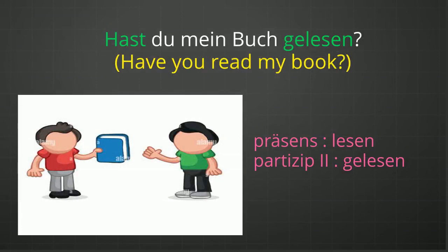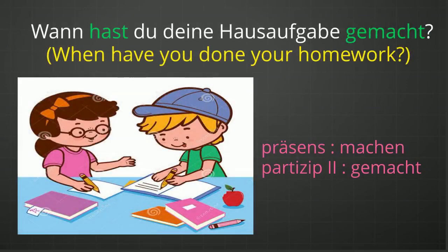"Hast du mein Buch gelesen?" Gelesen is the Partizip II form of the verb lesen, which is a Haben verb. And that is why the conjugated form of Haben is at first position as we are writing a yes/no question (Ja/Nein-Frage), and gelesen is at the end of the question. "Wann hast du deine Hausaufgaben gemacht?" Gemacht is the Partizip II form of machen, which is a Haben verb. That is why the conjugated form of Haben is at second position as we are writing a W-Frage, and gemacht is at the end of the question according to the rule.